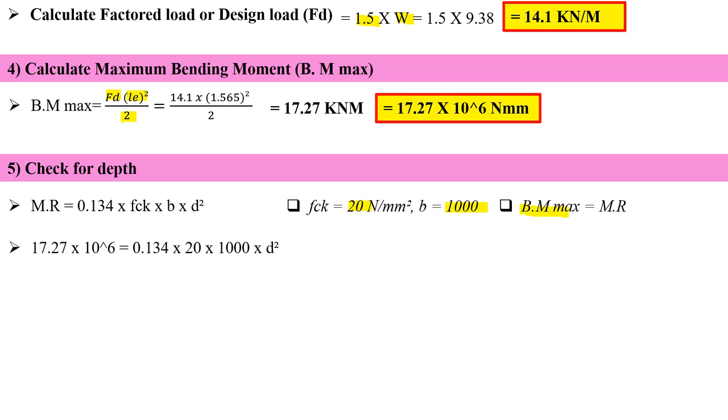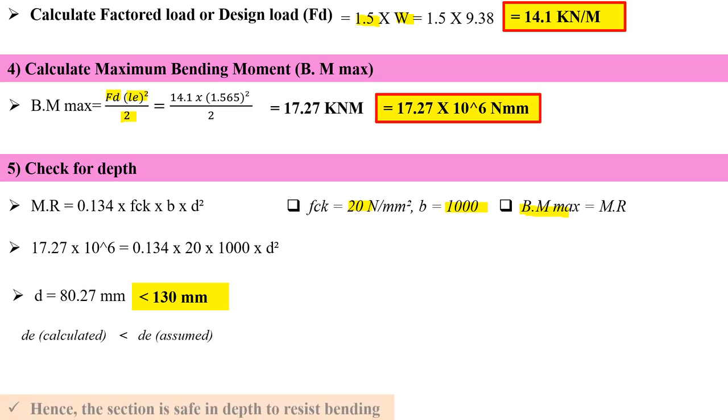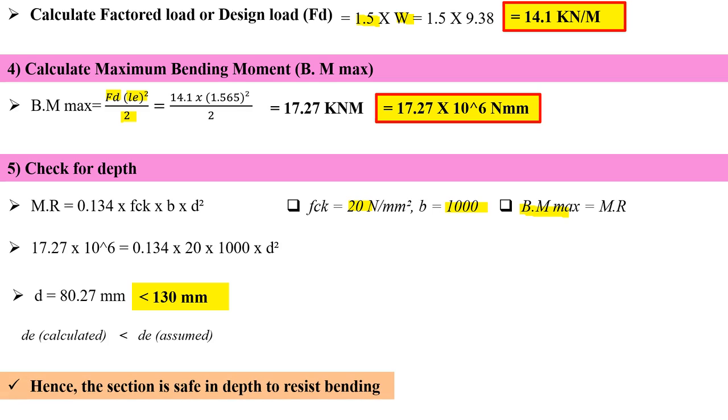One equation, one unknown, I can easily calculate the value of D. That equals 80.27 mm, which is less than the assumed effective depth of 130 mm. So the section is safe in depth to resist the bending.